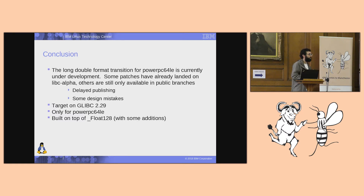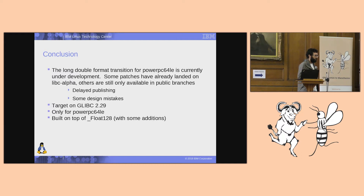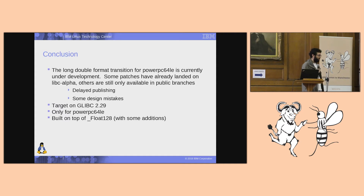There was a question about the design decision: once the transition is done, the default symbol version would still be IBM long double as exported from the Glibc .so file, and the transformation to get the new function only comes from the header file by calling a function symbol with a different name. This means that anybody who doesn't use the header but adds a prototype of their own will get, in effect, the wrong version of the function. The question is: do we know if that happens in code out there?